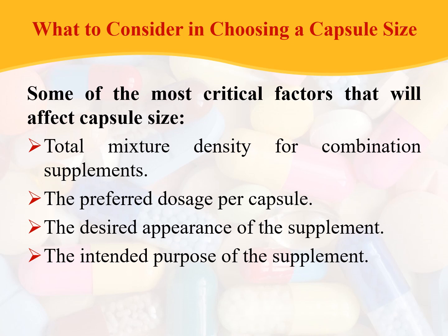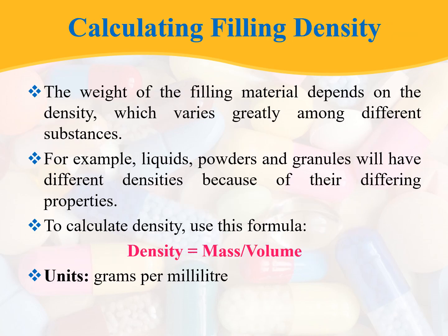Now let us discuss some factors to consider when choosing a capsule size. The important critical factors are: the total mixture density for combination supplements, the preferred dosage per capsule, the desired appearance of the supplement, and the intended purpose of the supplement. The amount of filling material by weight depends upon the density, and for calculating the filling weight, you need to calculate the filling density.